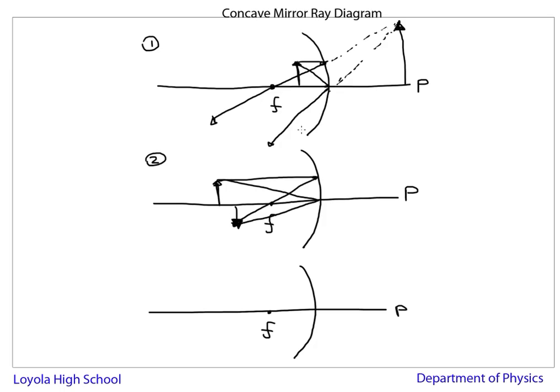The third case is where I put the object at the focal point. And if I put my object at the focal point, same thing, I draw a light ray that hits the mirror and goes through the focal point itself. And then I'll draw another line that hits the mirror at the principal axis point and bounces off.